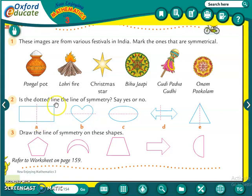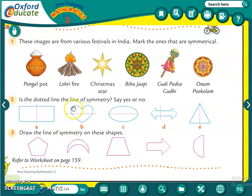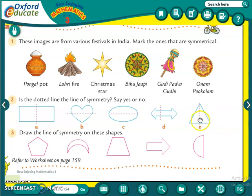Now, is the dotted line shown a line of symmetry? Say yes or no. In the shapes given, a symmetrical line has been drawn - you need to say whether it is a symmetry line or not. The first one: yes, it is. The second one: no, it is not, because the upper part of the line is curved but the lower part is not. The third one: yes, symmetrical line is there because both parts are the same. The fourth one: no, it is not symmetrical - both shapes are not the same. The fifth one: both shapes are the same, so it is symmetrical.